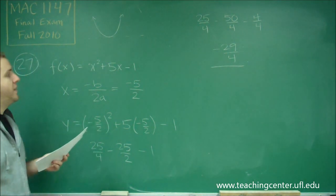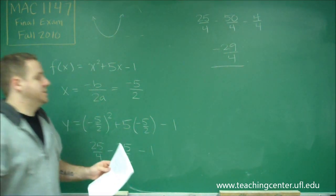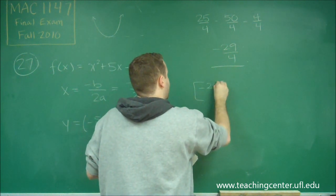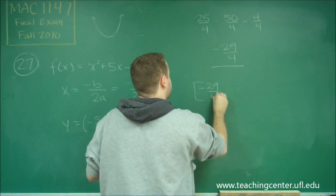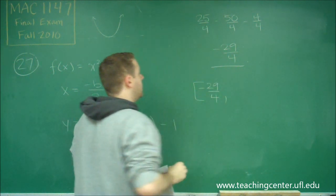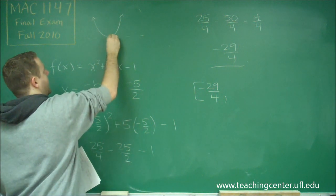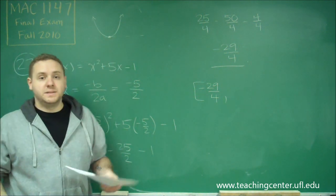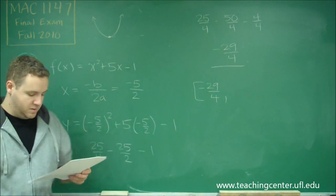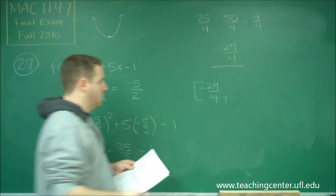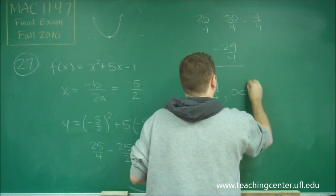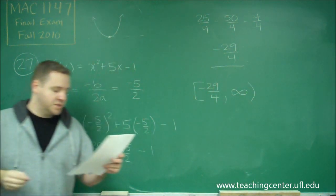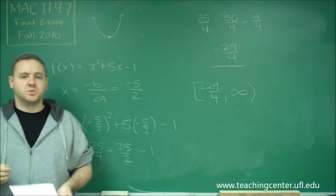Therefore, the range of our function starts there. We put a bracket there because we do actually have that bottom point — it is included. And then we go up to infinity, which gives us answer choice A.